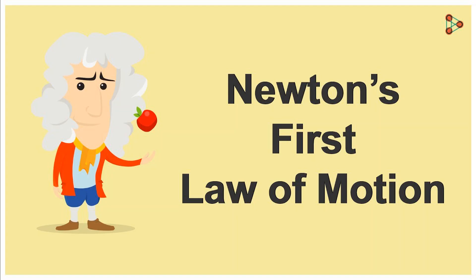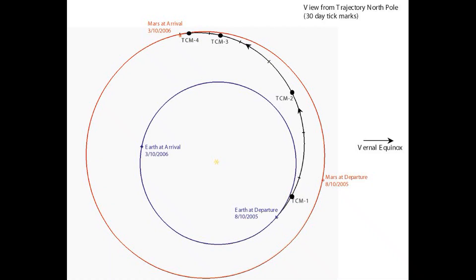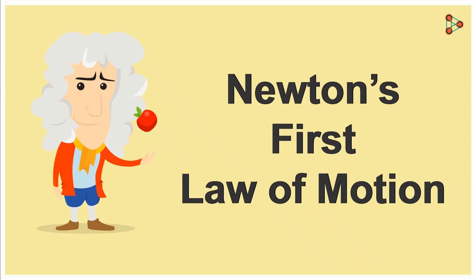Newton's first law says that an object will continue to be in motion until a force is acted upon it. So fuel is needed only to correct the trajectory of the spacecraft, and this manoeuvre is called the trajectory correction manoeuvre.